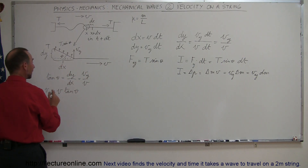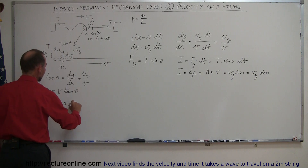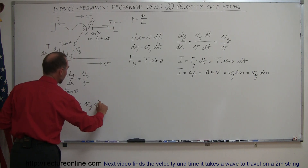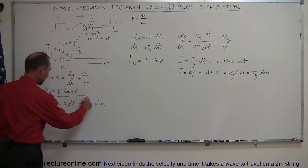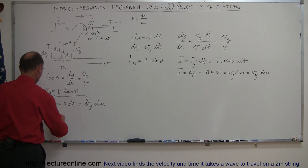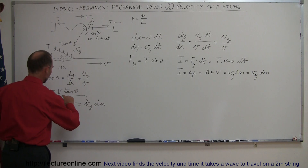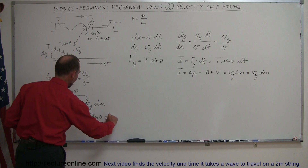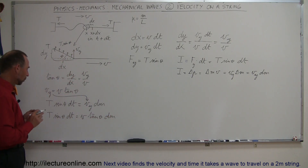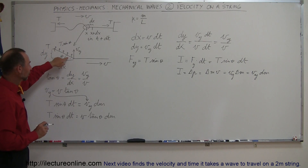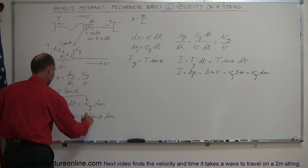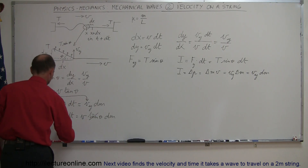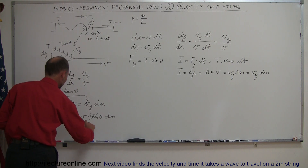Setting the two expressions for impulse equal: T·sin(θ)·dt = v_y·dm. Now we substitute v_y = v·tan(θ) from our earlier result: T·sin(θ)·dt = v·tan(θ)·dm. Here we use a small-angle approximation — at the very edge of the wave the angle is very small, so sin(θ) ≈ tan(θ). These cancel, leaving T·dt = v·dm.